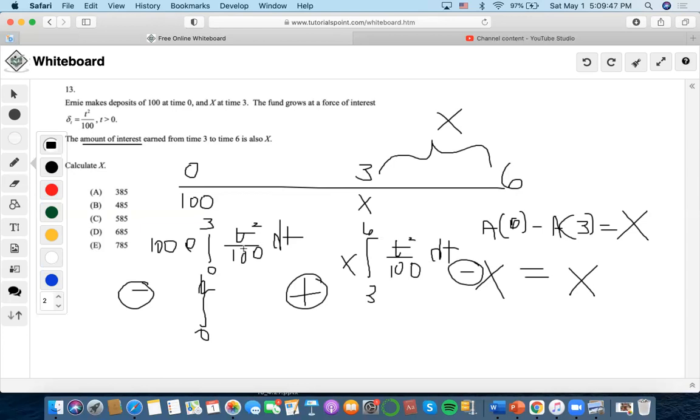If we solve this integral, it would become t cubed over 300. We plug in 3, so 3 cubed divided by 300 is 0.09. So e to the 0.09 is 1.094, we multiply by 100, and we get 109.417.